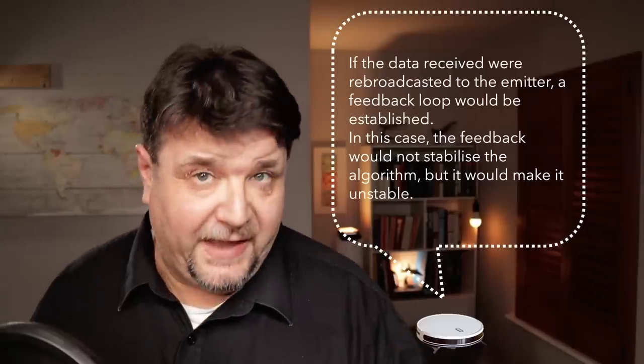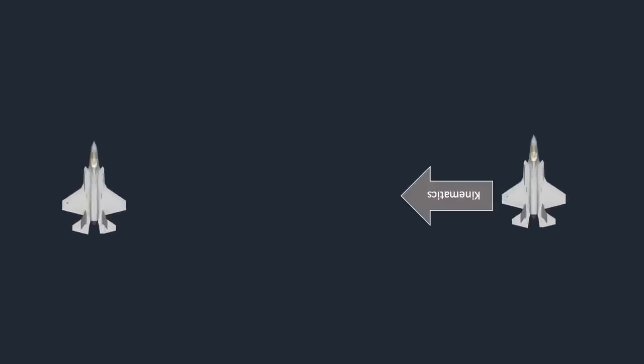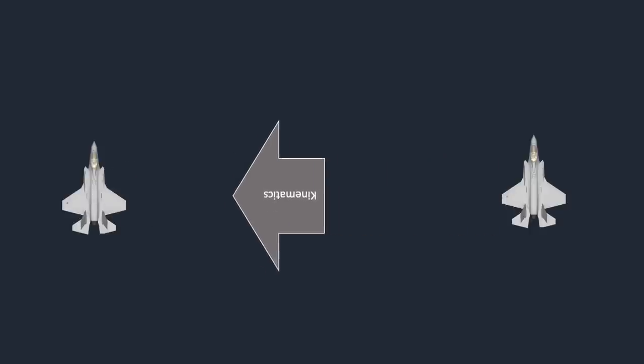Why independent? It is important for the stability of the fusion algorithm that the information exchanged does not contain information that has been previously received by another aircraft and then transmitted back. If this happens, the estimates about track information — like speed, altitude, position and so on — may become very wrong very quickly. It is a case of unwanted feedback. So all the F-35s in a flight receive information from the other aircraft and then draw their own conclusions independently.